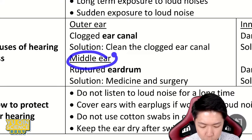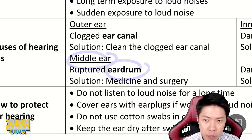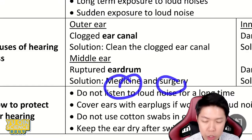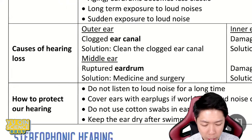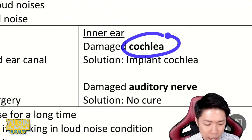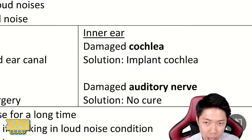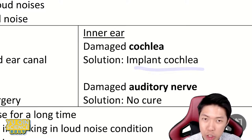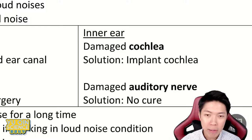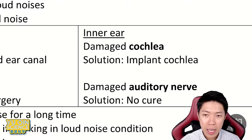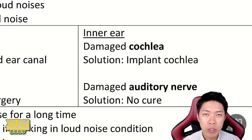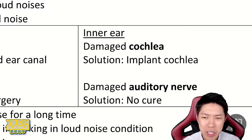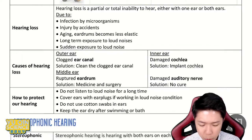Breaking it down by ear section: if it's the outer ear, the ear canal may be clogged by earwax or some substance — so clean it. If it's an eardrum problem in the middle ear, treat it with medicine or surgery. For the inner ear, if it's cochlea, we can implant a new cochlea. But if it's the auditory nerve, there's no cure — nothing we can do if the nerve is damaged.